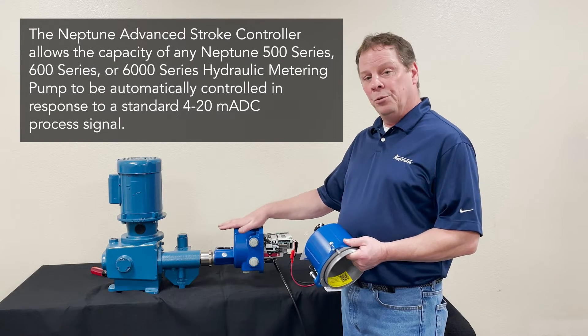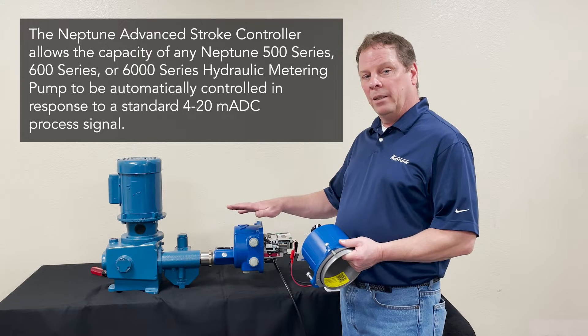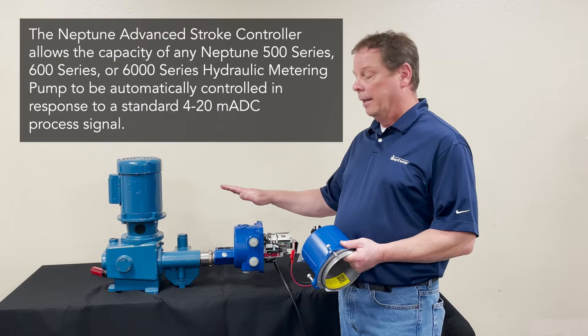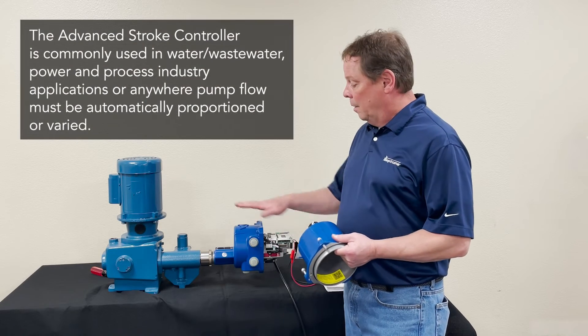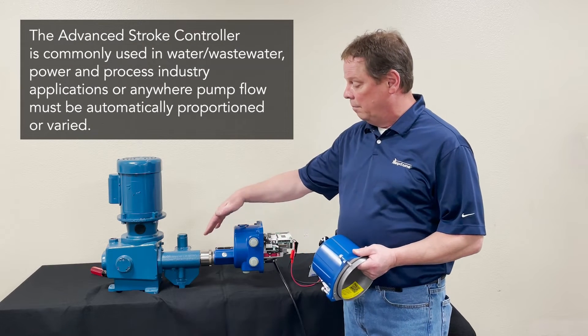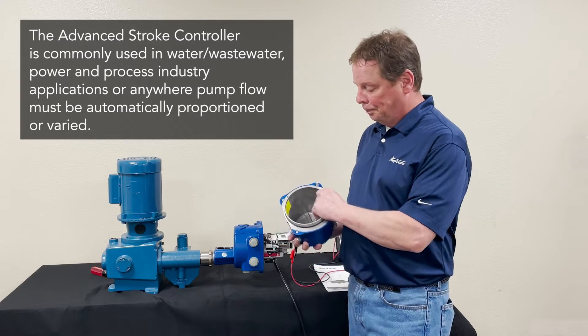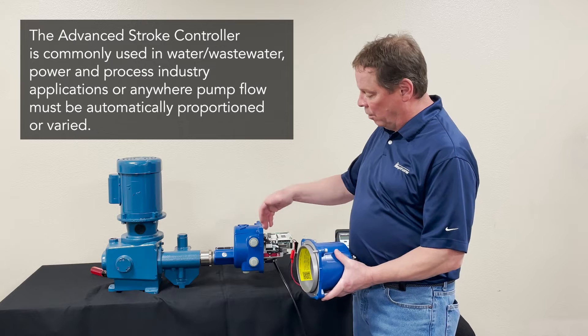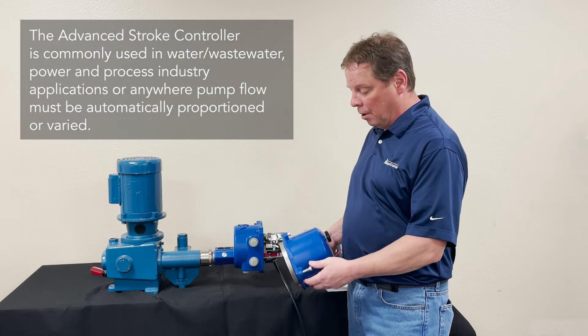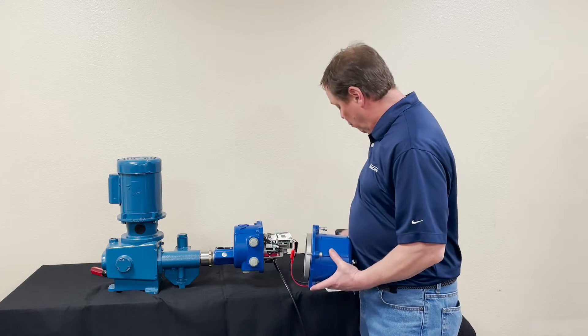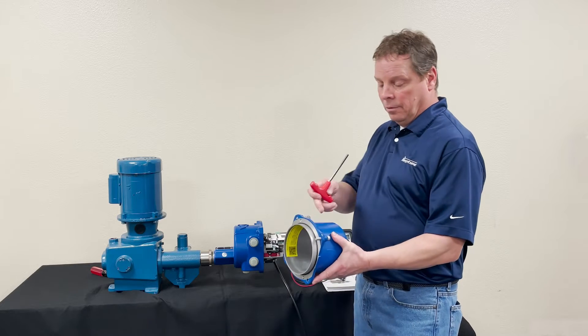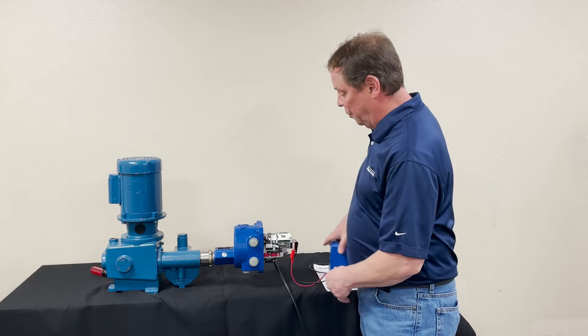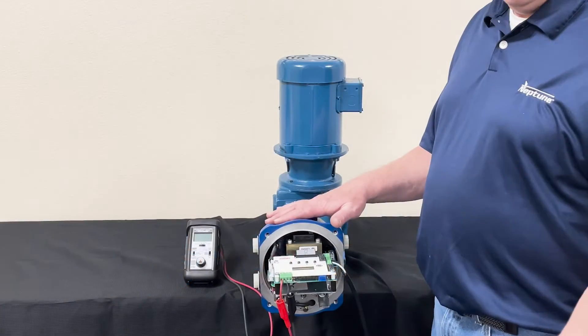This same controller is used throughout the hydraulically actuated pumps that we have, which includes our 600, 6000, and 500 series pumps. This has already been connected to the pump. When you receive it, you'll have to take off the front cover. The front cover comes off with a six millimeter wrench, four screws, and it slides off.